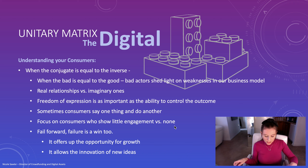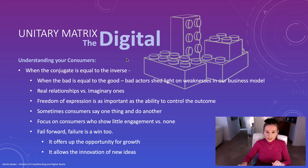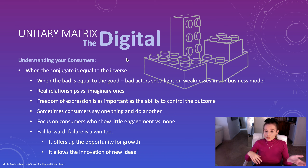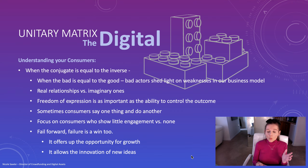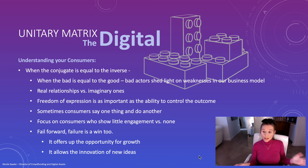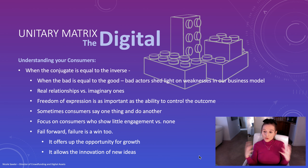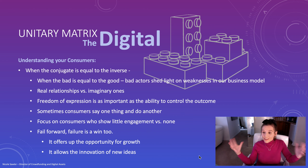Moving on to the U in our values matrix — the unitary matrix. If you're familiar with math, a unitary matrix is something where the conjugate is equal to the inverse — so the bad is essentially equal to the good, the positive is equal to the negative. So bad actors — Cameron brought up the karma system — they shed light on our weaknesses and our business model. When we're building something, we want to make sure the good outweighs the bad, but the bad also opens up new doors to innovate and become creative in solutions so it doesn't happen again, and maybe we'll come up with something better than everybody else.